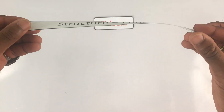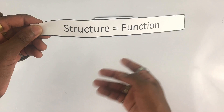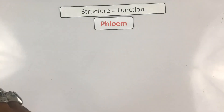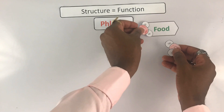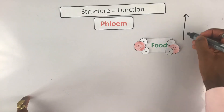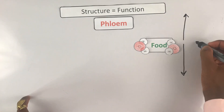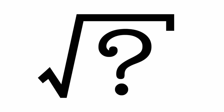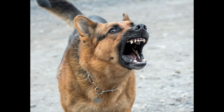The last specialized plant cell structure we're going to look at is the phloem. Again, the structure is related to the function, and the function of the phloem is to transport dissolved food around the plant — not just up, but up, down, and side to side. Fun fact: the root word for 'phloem' actually comes from the Greek word for bark.